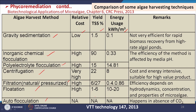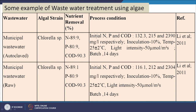Inorganic chemical flocculation achieves maximum TSS yield of around 90 percent with energy usage of 0.33. Gravity sedimentation has the lowest energy usage but very low TSS yield compared to other methods. The appropriate harvesting method can be selected based on the situation, microalgae type, and microbial cell density.